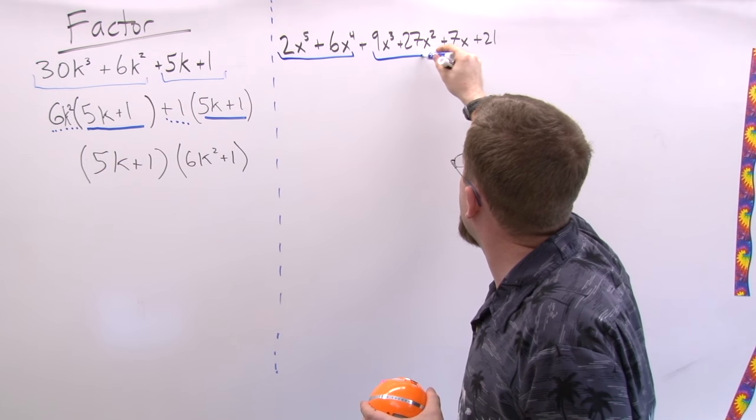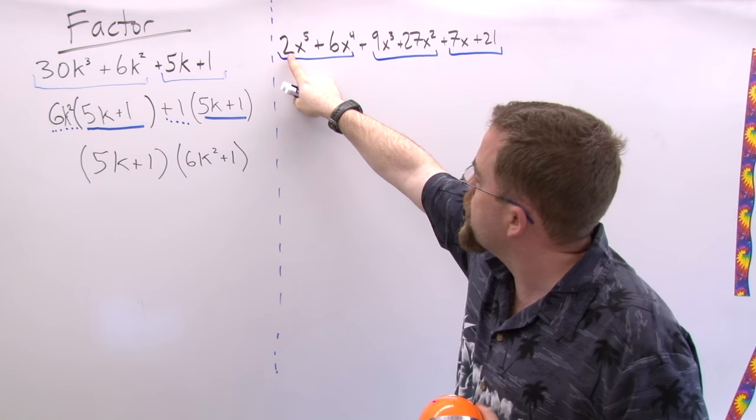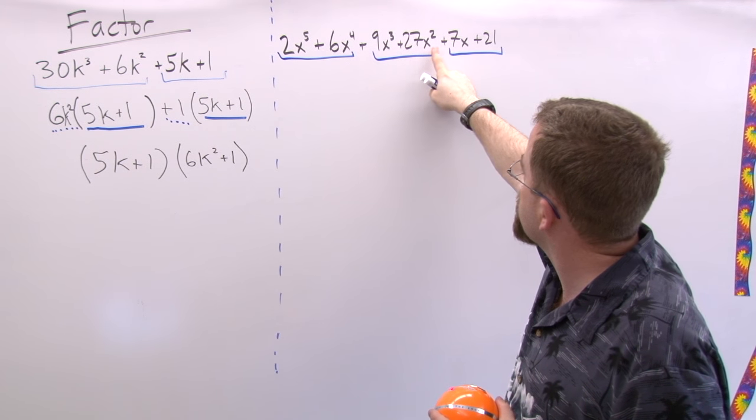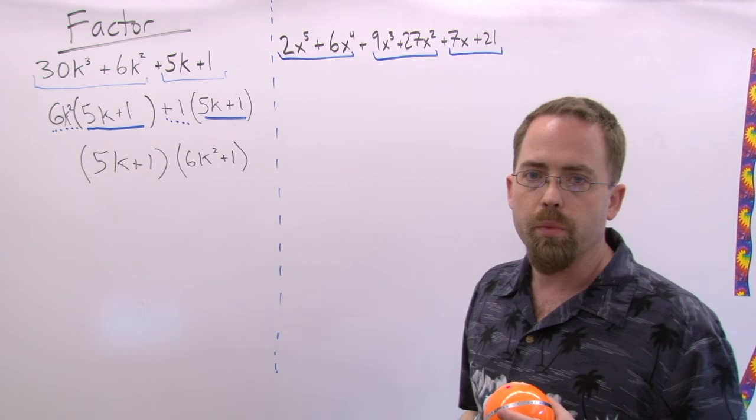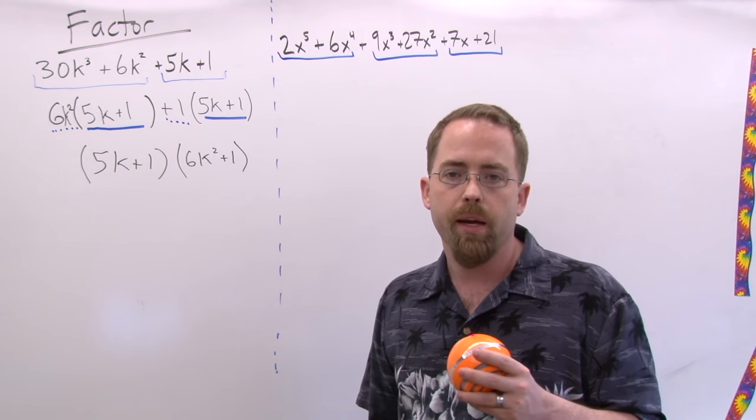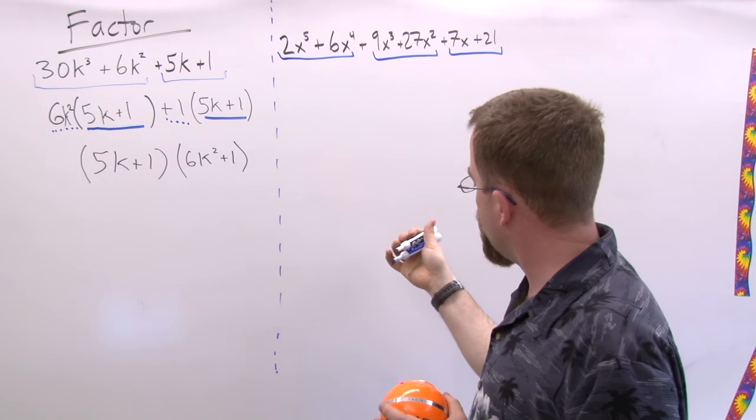That in every case, in terms of the numbers, two times three is six, nine times three is twenty-seven, three times seven is twenty-one. The second one in terms of numbers is always three times bigger than the one before it, and the X's are going steadily down by one.